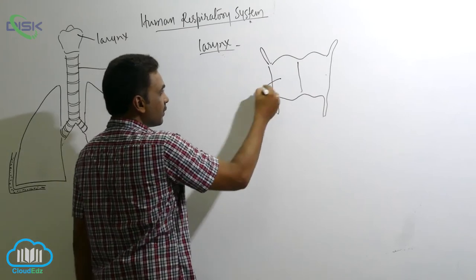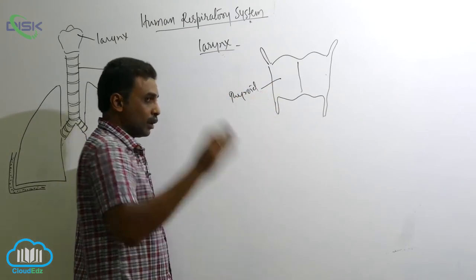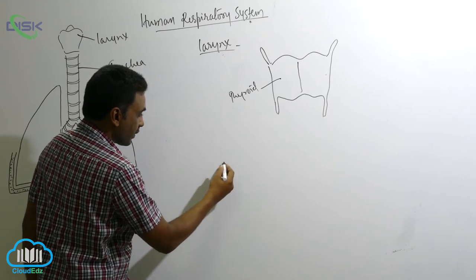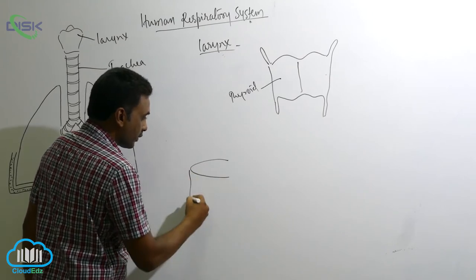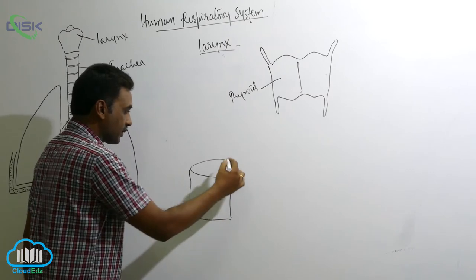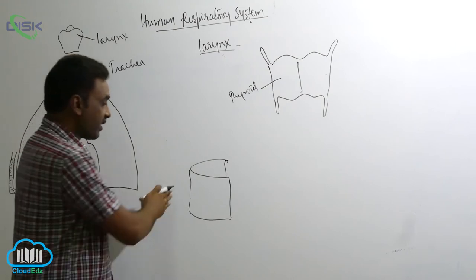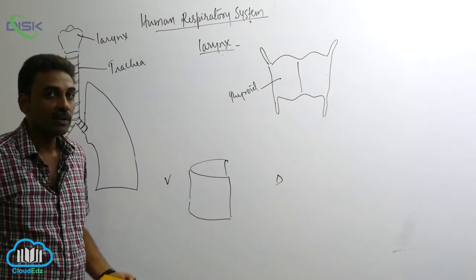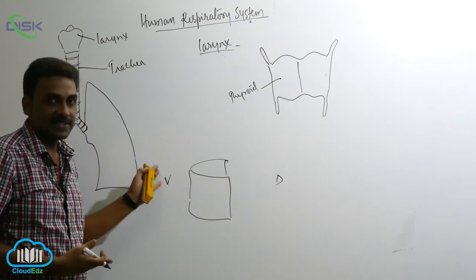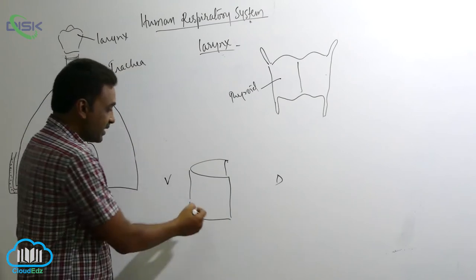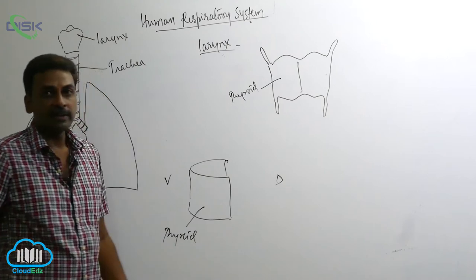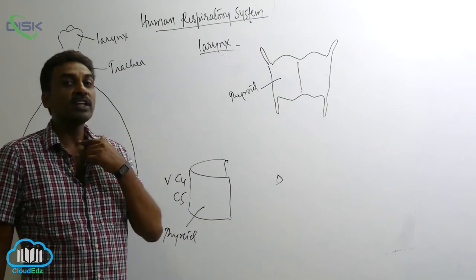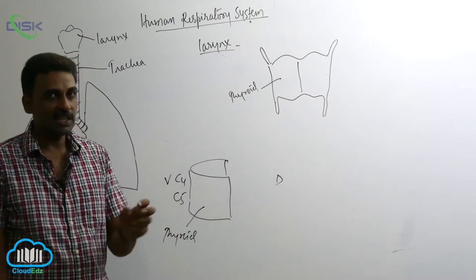Looking at the thyroid cartilage from the dorsal and ventral views, this is the ventral side and this is the dorsal side, with the lateral side as well. The thyroid cartilage is present at the level of C4 and C5 — the fourth and fifth cervical vertebrae. At that level, you will see the thyroid cartilage.